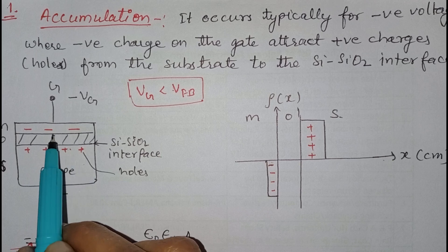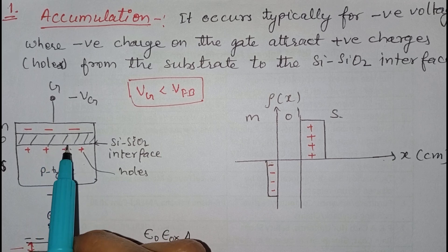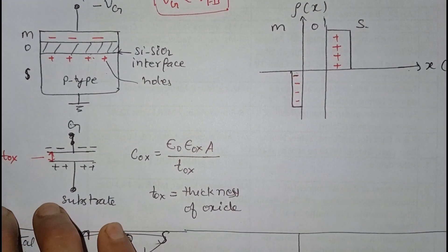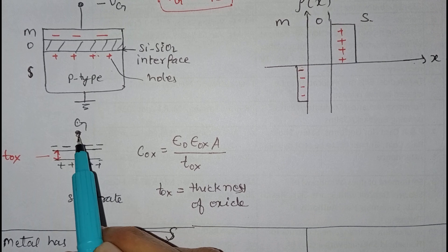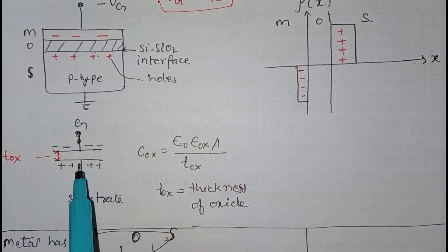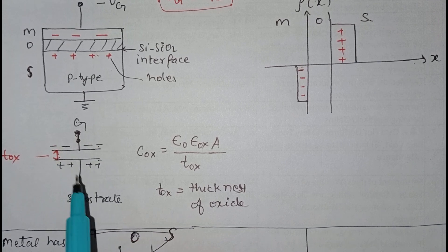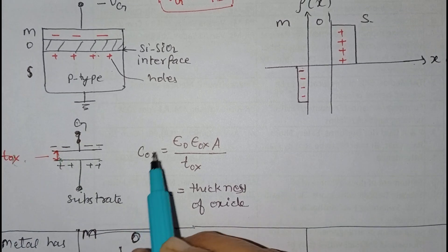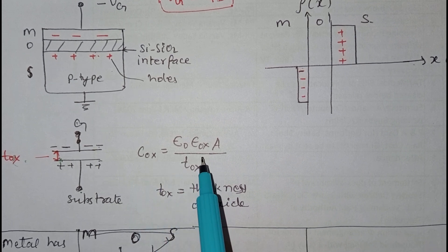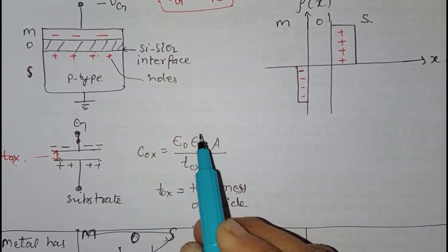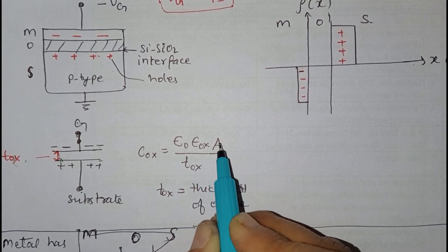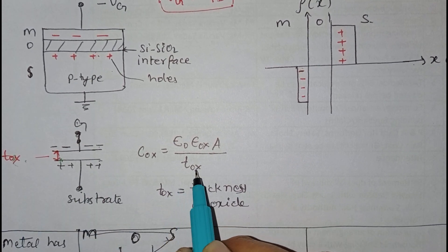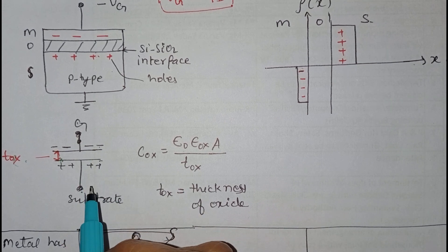So this will act as a parallel plate capacitor — one plate is the metal, the other plate is the accumulated holes at the interface, and the silicon dioxide is the dielectric with thickness T_ox. The capacitance is given just like a parallel plate capacitor: epsilon_naught times epsilon_ox (oxide permittivity), times the overlapping area, divided by T_ox, the thickness of the dielectric.